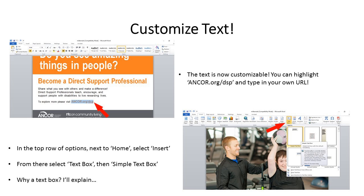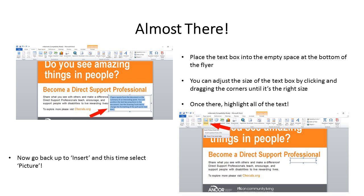First, if you want to put your organization's website instead of anchor.org/DSP, just highlight that URL and type your organization's link in that space — it will match the color automatically. Once you're done with that, in the top row next to Home, select Insert, then select the first simple text box. Microsoft Word doesn't really believe that photos and images should belong together, so by telling it we are going to add text, it will allow us to add a photo later.